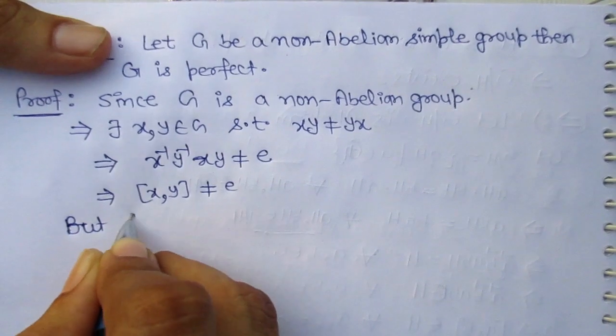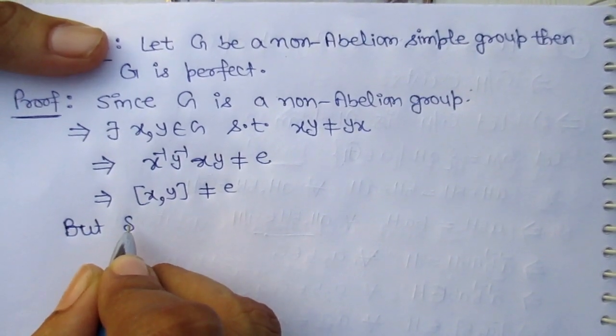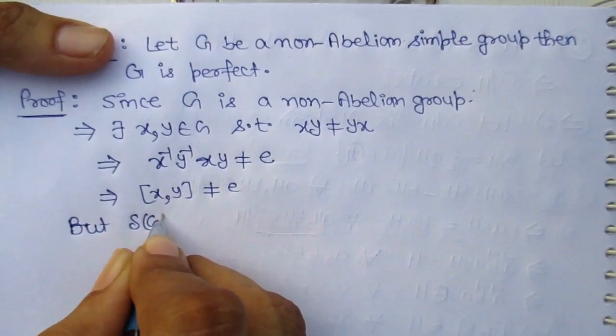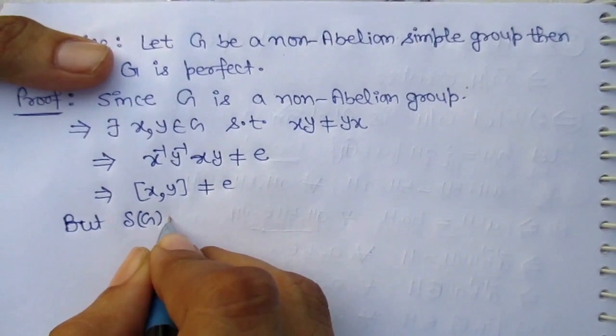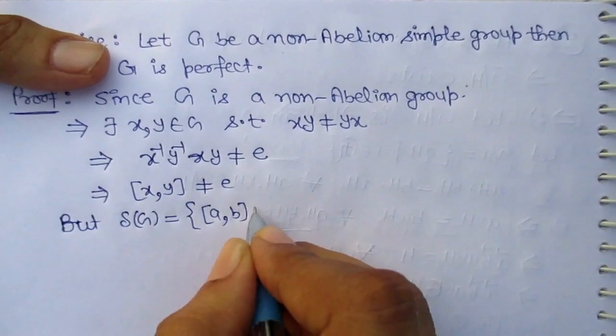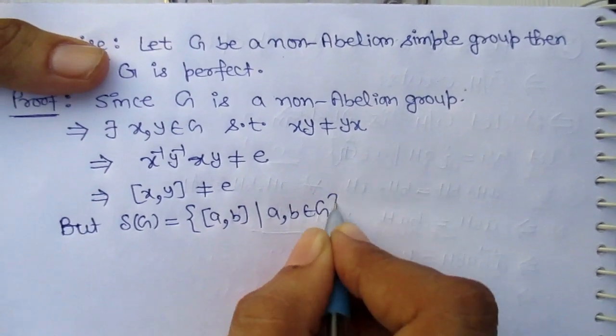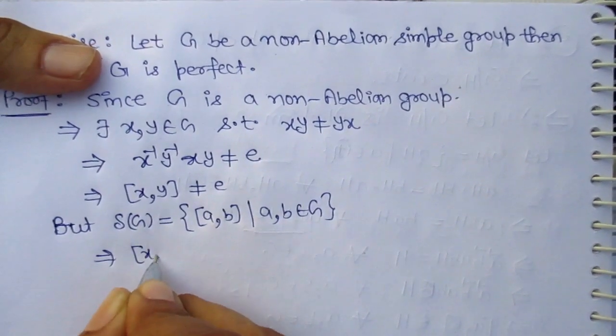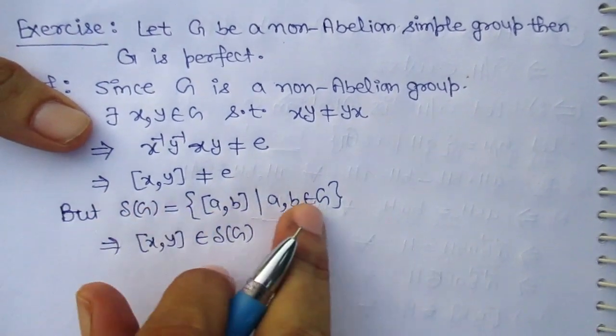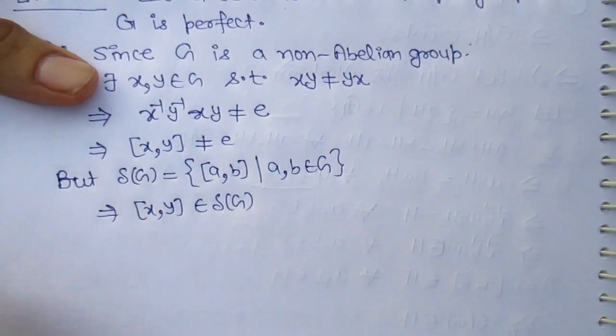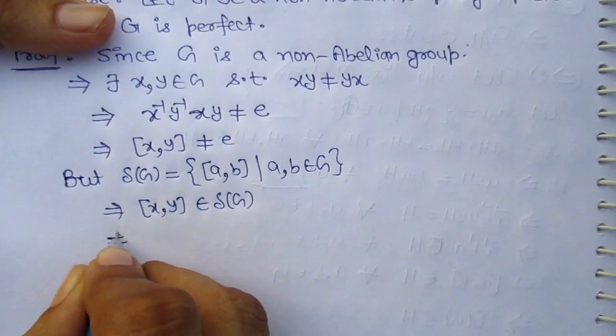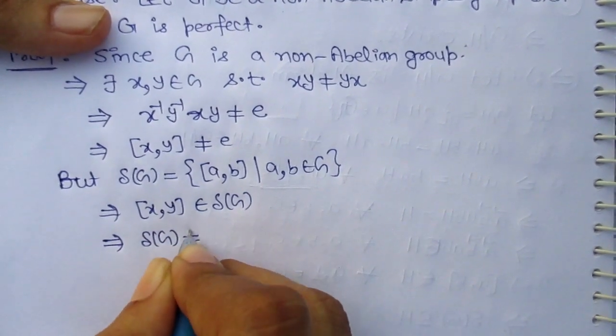But what is delta G? Delta G is equal to the set of all commutators of a, b. It implies the commutator of xy belongs to delta G, and since this is non-identity, it means delta G is not equal to the identity group.